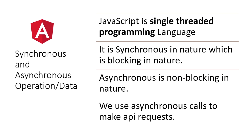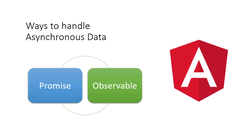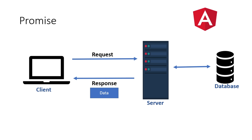On the other hand, asynchronous is non-blocking in nature, so you can execute multiple processes at a time. That's why we use asynchronous data calls to make API requests in Angular. There are two ways to handle asynchronous data: one is Promise and the other is Observable. We will see them one by one.